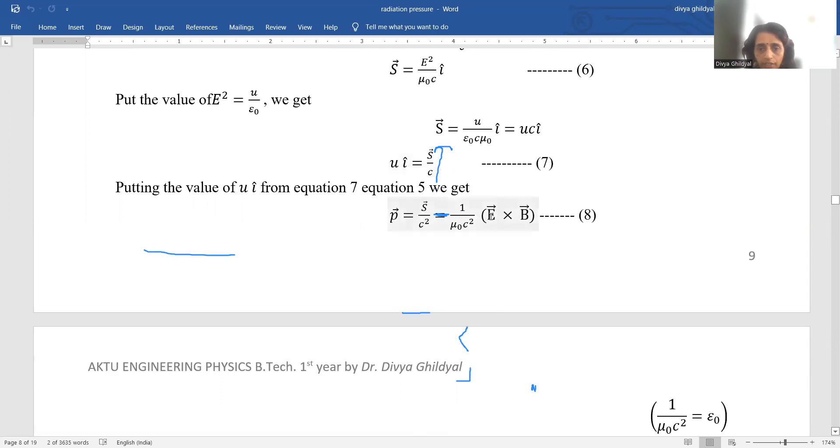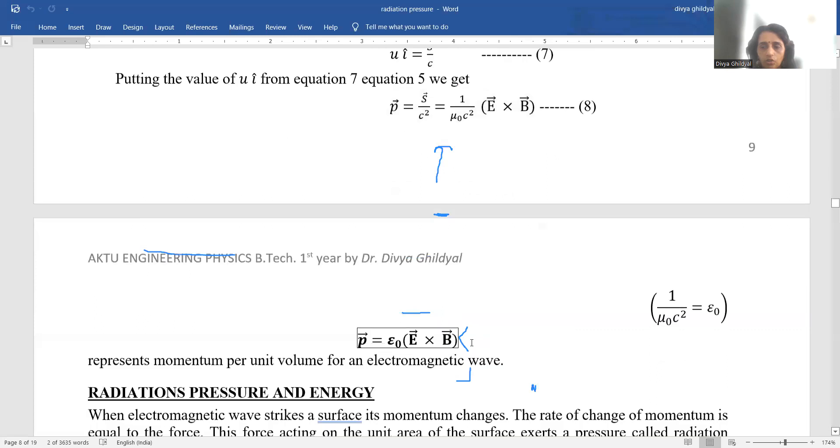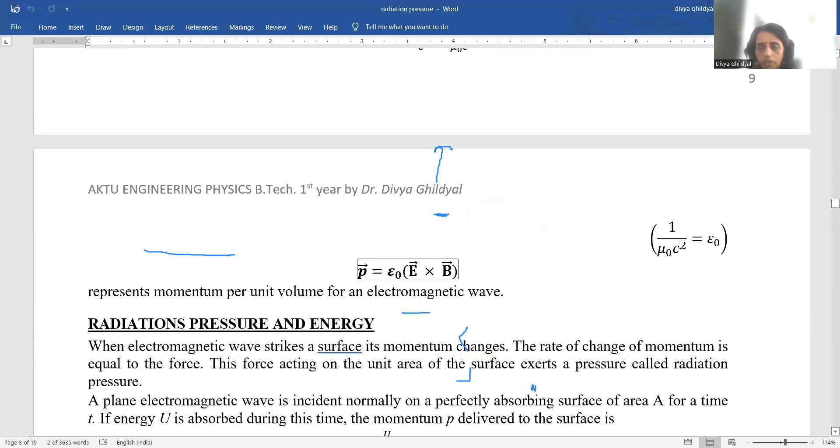You write it that way p becomes equal to s upon c square. So this value we have put here it becomes 1 upon mu naught c square e cross b. 1 upon mu naught c square is equal to epsilon naught. So p equals to epsilon naught e cross b. This represents momentum per unit volume of an electromagnetic wave.